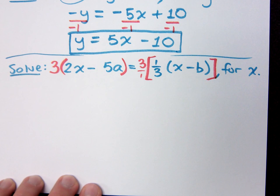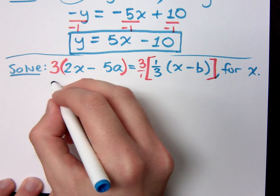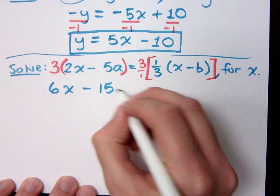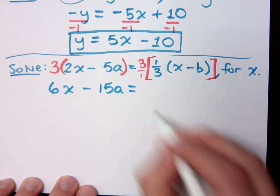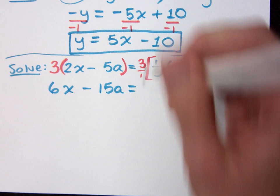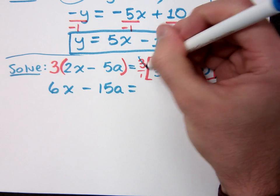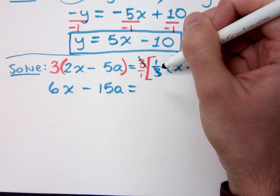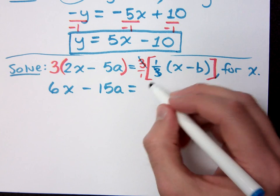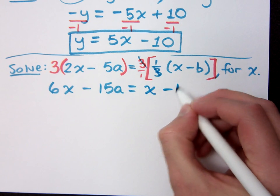What do you get on the left side of the equation? 6x minus 15a equals. Now, what's going to happen here? The 3 and the 1 third will reduce to give you a 1. And that's it, right? So what do we have? x minus b. x minus b.